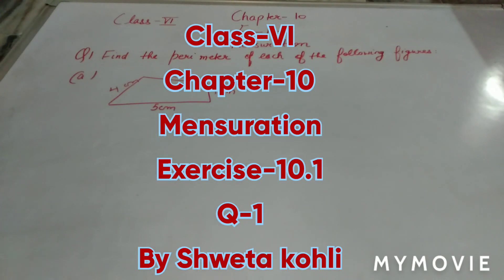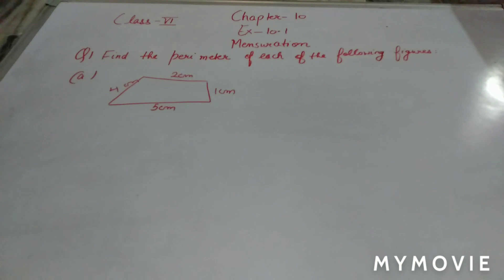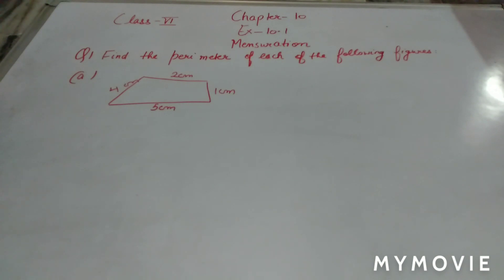Students, let us start with Exercise 10.1 of Chapter 10, that is Mensuration. Question number 1 is: find the perimeter of each of the following figures. There are, I think, total 8 parts.